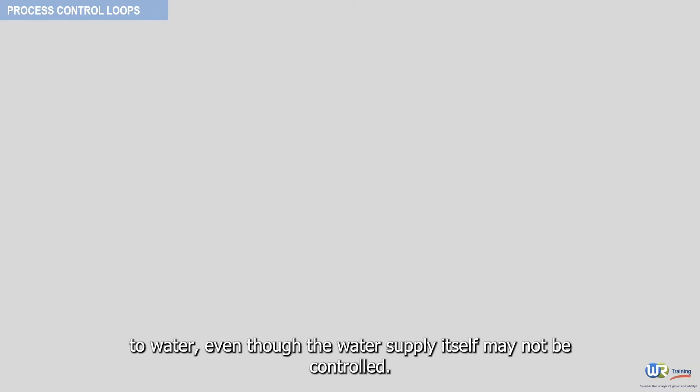Imagine a process in which an acid must be diluted with water in the proportion two parts water to one part acid. If a tank has an acid supply on one side and a water supply on the other, a control system could be developed to control the ratio of acid to water, even though the water supply itself may not be controlled. This type of control system is called ratio control.